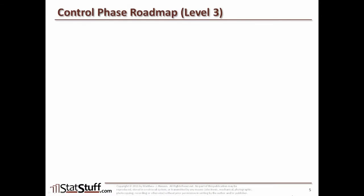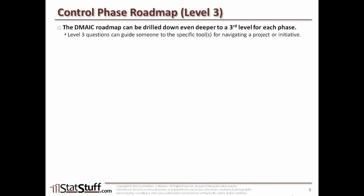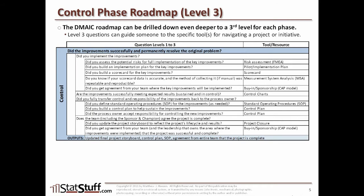Now let's dig a little deeper by looking at the third layer — the control phase of DMAIC. Just as we did in the prior phases, we're going to dig into the third level for the control phase. What we're trying to do in the control phase is ultimately answer this top-level question: did the improvement successfully and permanently resolve the original problem? Once we can answer yes to that, the project will be complete. But to get to that point, we have to ask ourselves a few extra questions at the second and third layer.